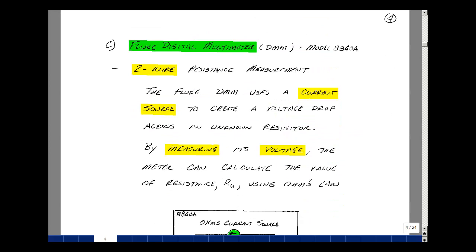In lab, we have a Fluke digital multimeter, model 8840A. And with this meter, we can measure a variety of things, one of which is resistance, and there's actually two different ways of doing that. The first method we're going to look at is called a two-wire resistance measurement. Now, this Fluke digital multimeter uses a current source to create a voltage drop across an unknown resistor.